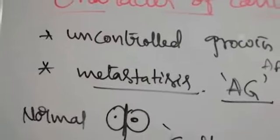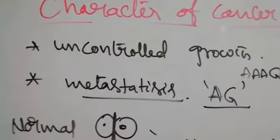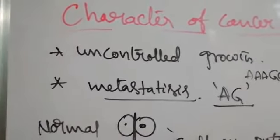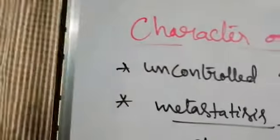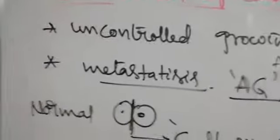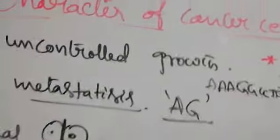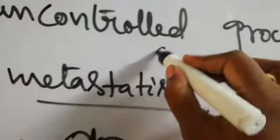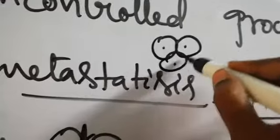The characteristics of cancer include uncontrolled growth, also called loss of contact inhibition. In normal cells, when undergoing division and coming in contact with other cells, one cell divides into two, then four cells.